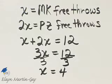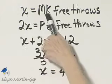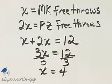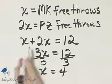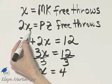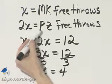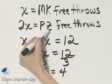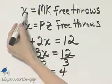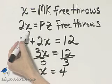So let's interpret what we have. What was X? X was this woman's free throws — she made 4 free throws, Maria Kaminsky. And then 2 times X would be 2 times 4, or 8, which is the number of free throws for Paula Zimmerman. So she made 4, she made 8. Notice the sum is 12, so we are correct.